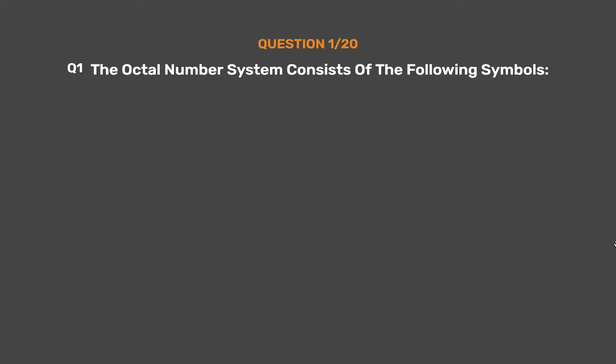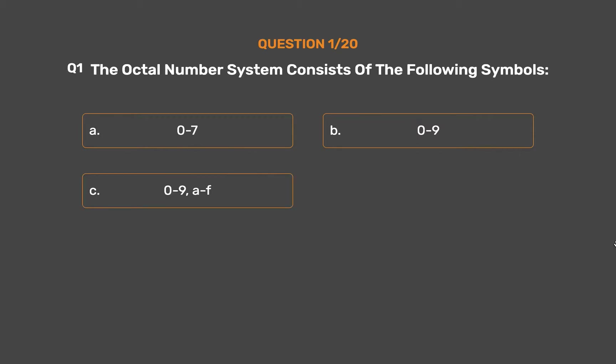The octal number system consists of the following symbols. Option A: 0 to 7. Option B: 0 to 9. Option C: 0 to 9, A to F. Option D: None of the above.